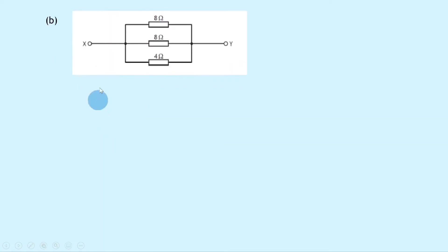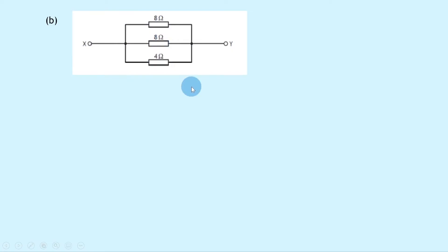Part B shows a parallel combination of three resistors between x and y, where we have an 8 ohm resistor, an 8 ohm resistor, and a 4 ohm resistor. So we should be thinking about resistors in parallel for this one.